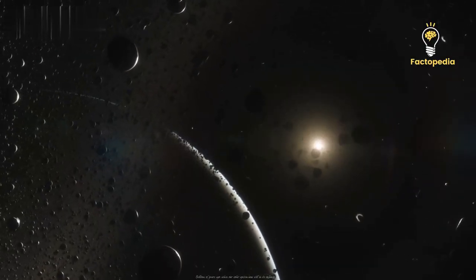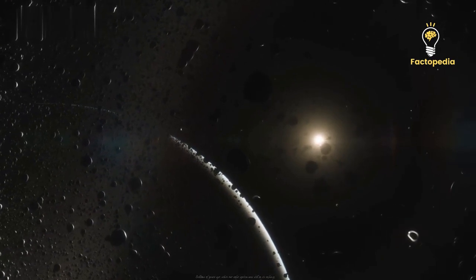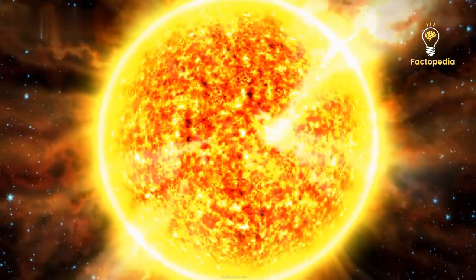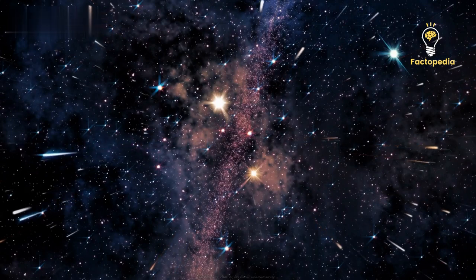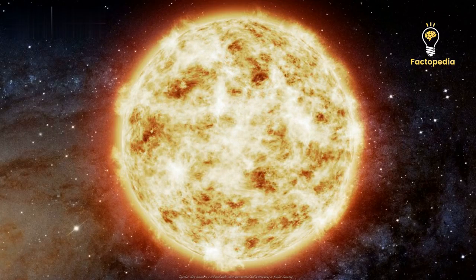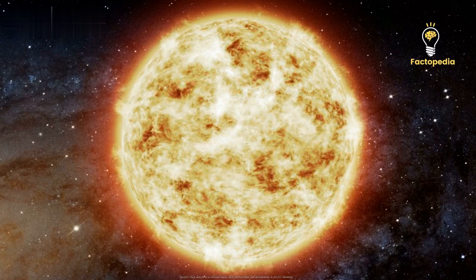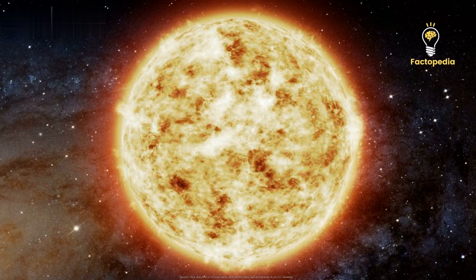Billions of years ago, when our solar system was still in its infancy, the sun was not alone. It had a companion, a twin star born from the same cosmic nursery. Together, they danced in a celestial waltz, their gravitational pull intertwining in perfect harmony.